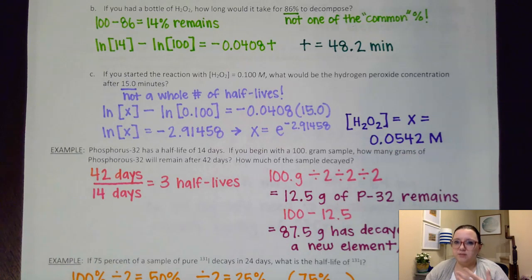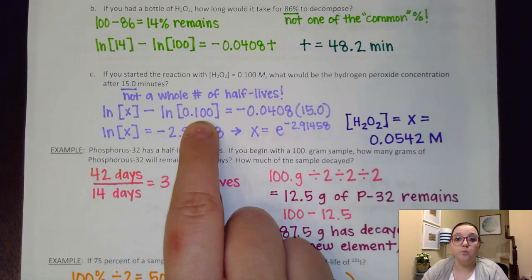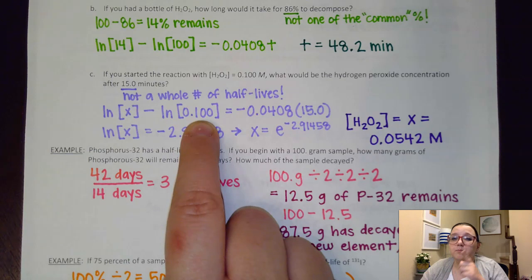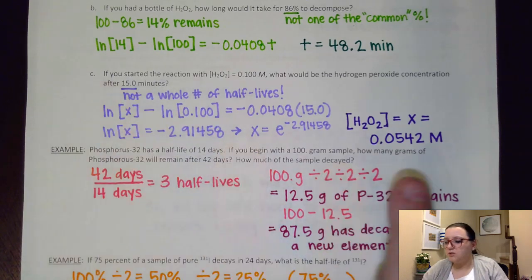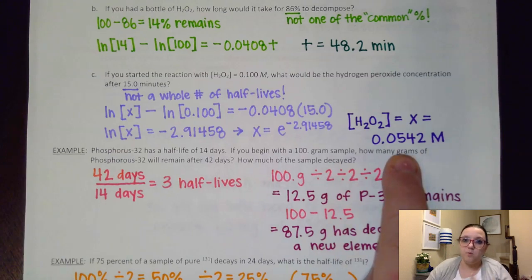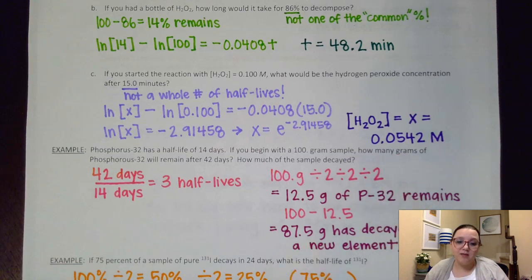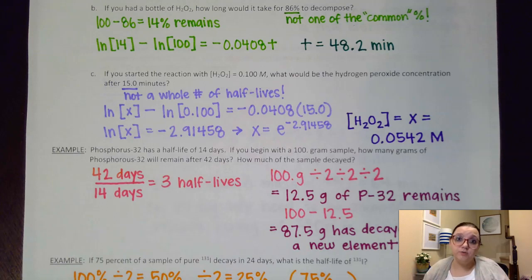So you've got to set both of these e raised to these values. E raised to a negative 2.91 number, and what that does is that cancels out the natural log. So you end up with just X equaling that e raised to that negative 2.91 number. And so when I plug that in my calculator, what that gets me is a molarity of 0.0542. I know the half-life time is 17 minutes. So that means this 0.1 would get cut in half down to 0.05 at 17 minutes. But I'm not quite to 17 minutes. I'm to only 15. So while this should be really close to 0.05, it won't be quite cut down all the way.